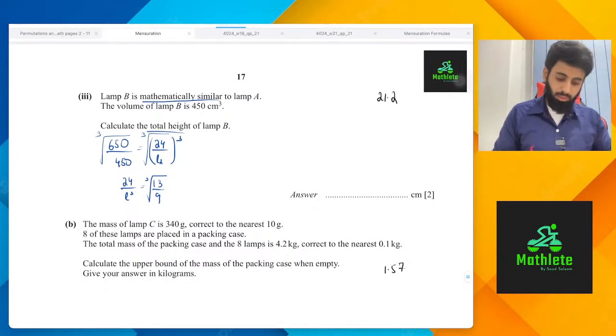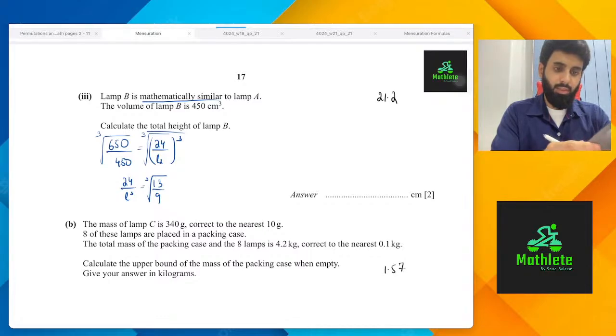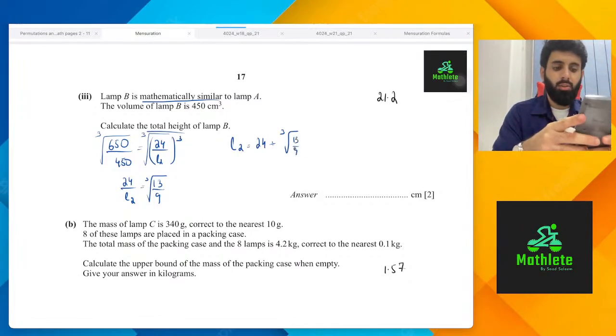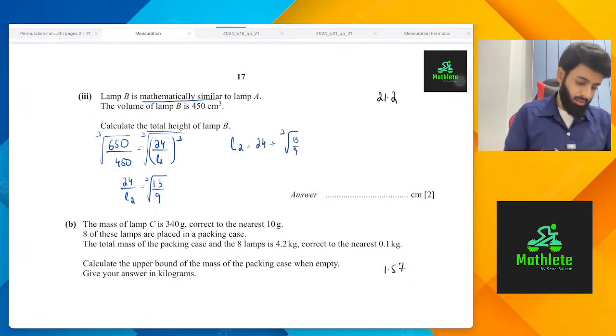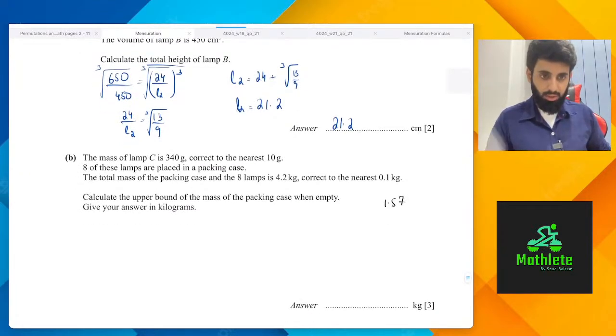So basically I've taken the cube root on both sides. I was about to work out the cube root of 13 upon 9, so cube root of 13 upon 9. L2 is going to be equal to 24 divided by the cube root of 13 upon 9. So we're looking at 21.23, so 21.2 is the answer. Hopefully that's clear to you guys. Now we're doing part B, let's see what part B says.